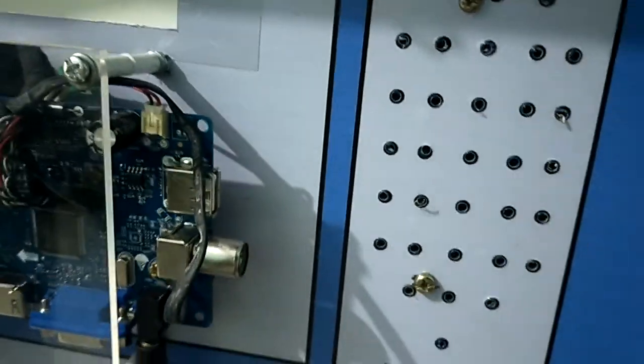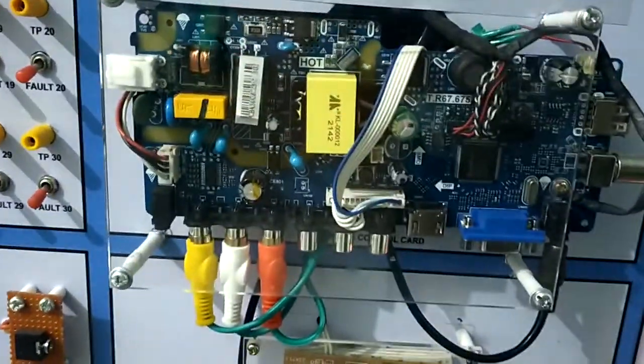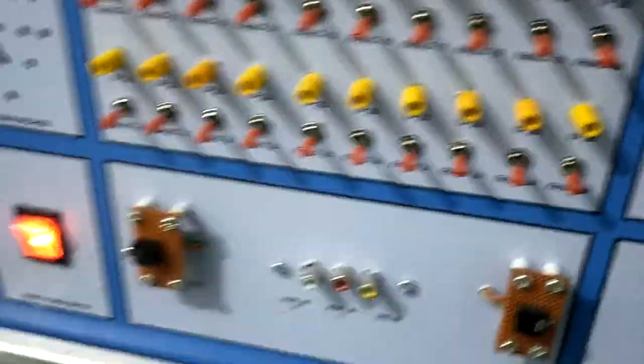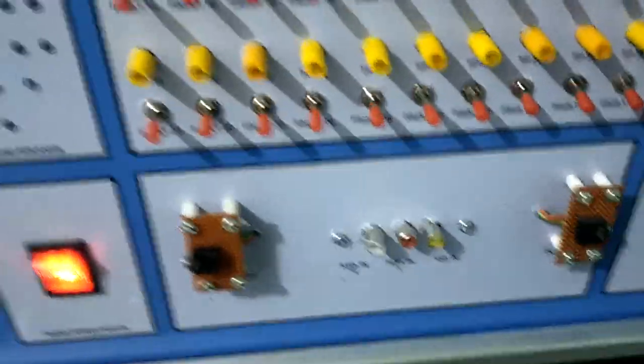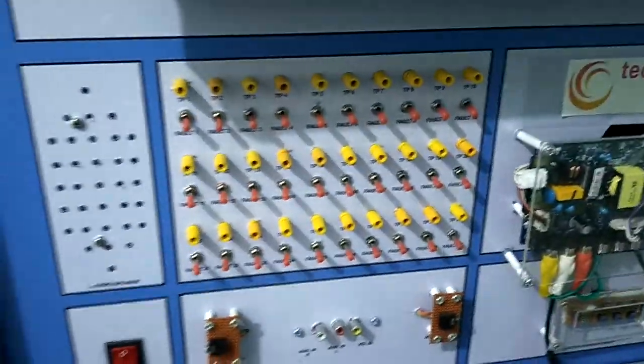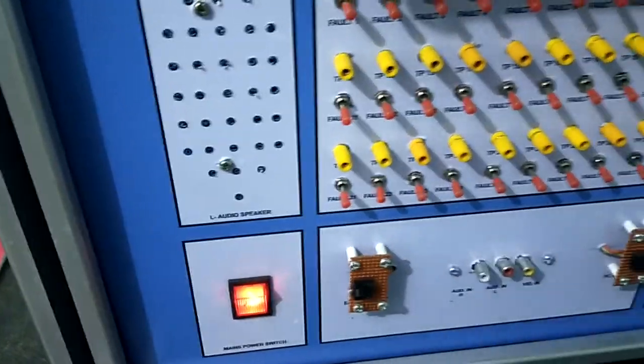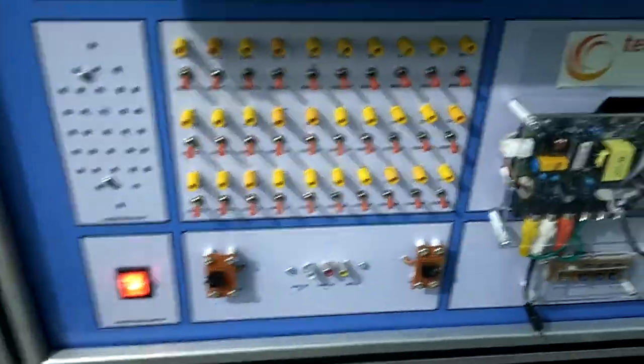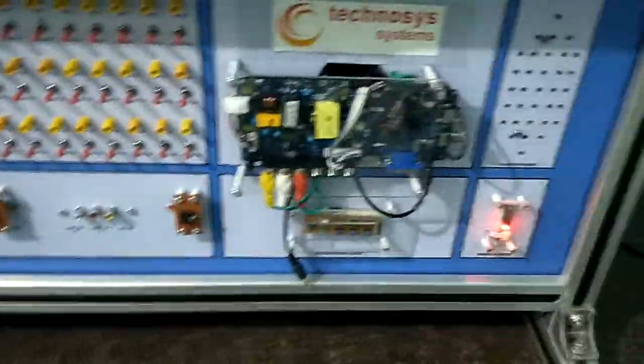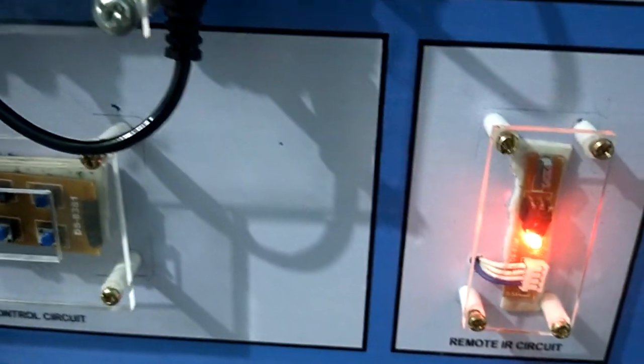So now we will demonstrate the working of TV trainer. First of all, what we have to do is we have to switch on from this point. Now we can see the LED is glowing and this is the remote IR section. This LED is also glowing.